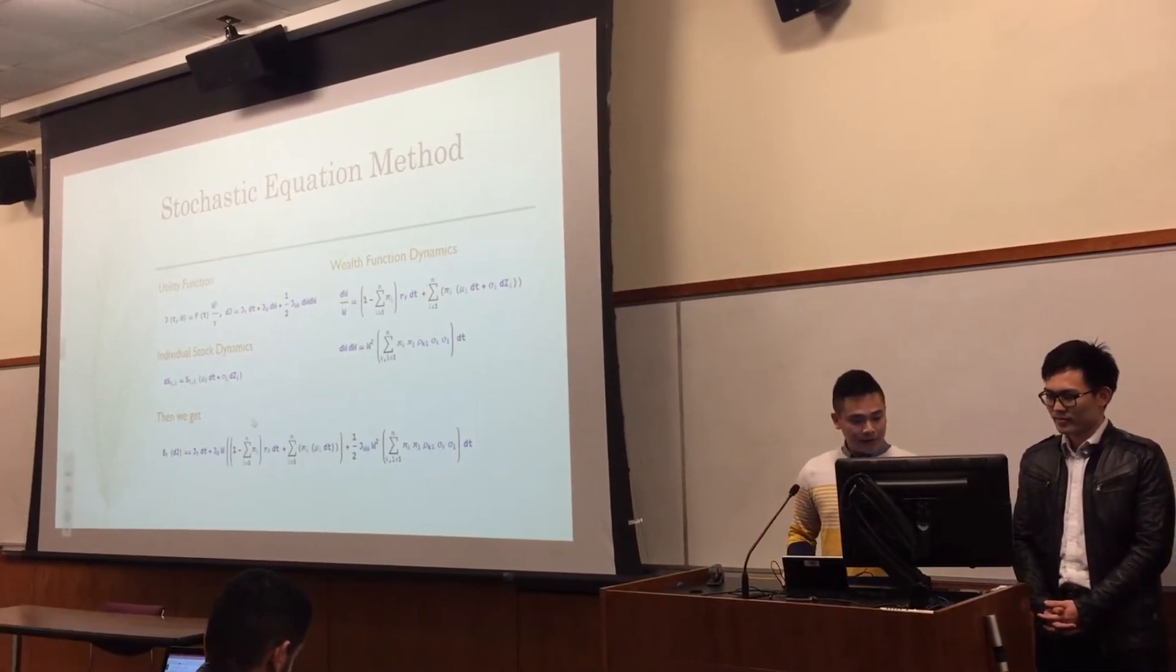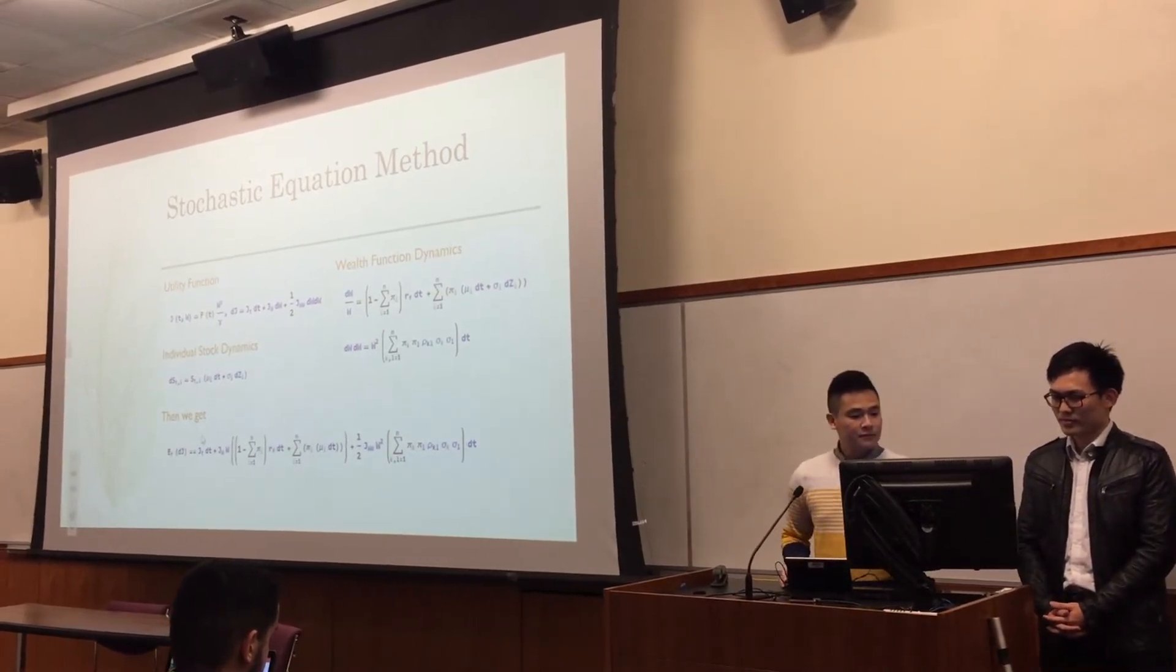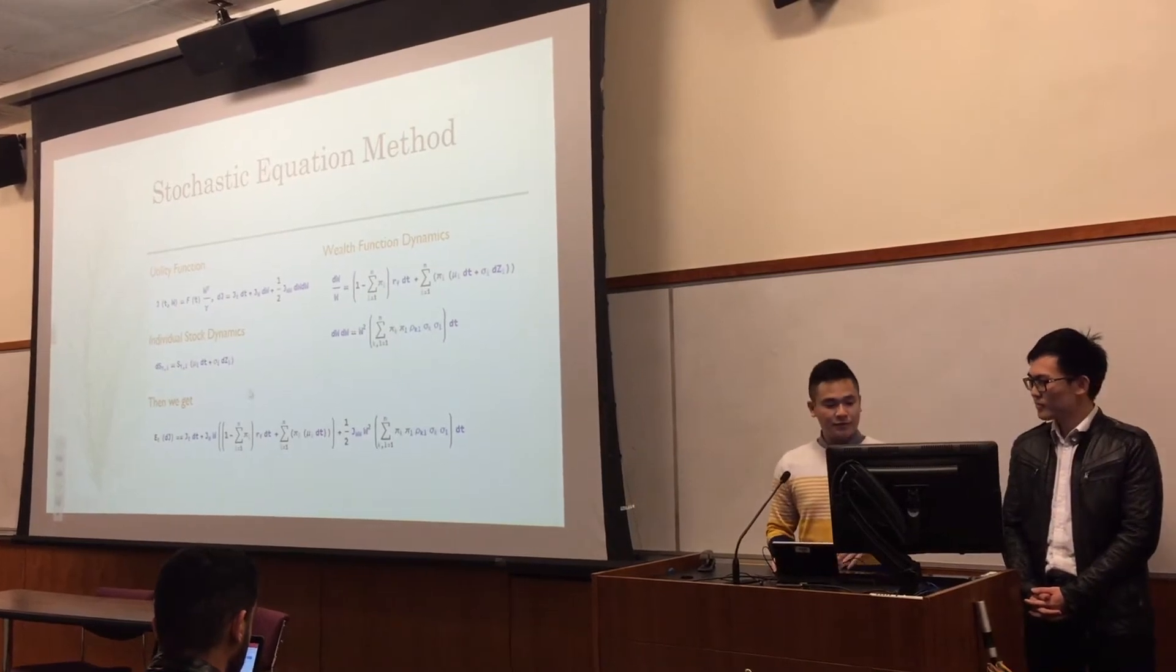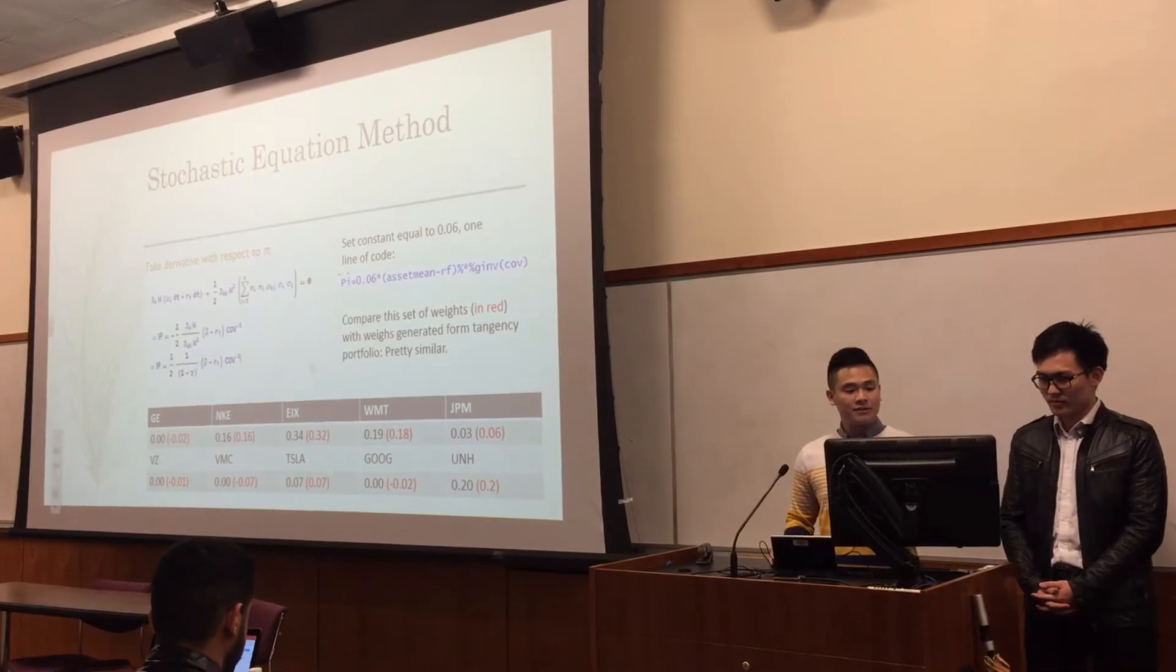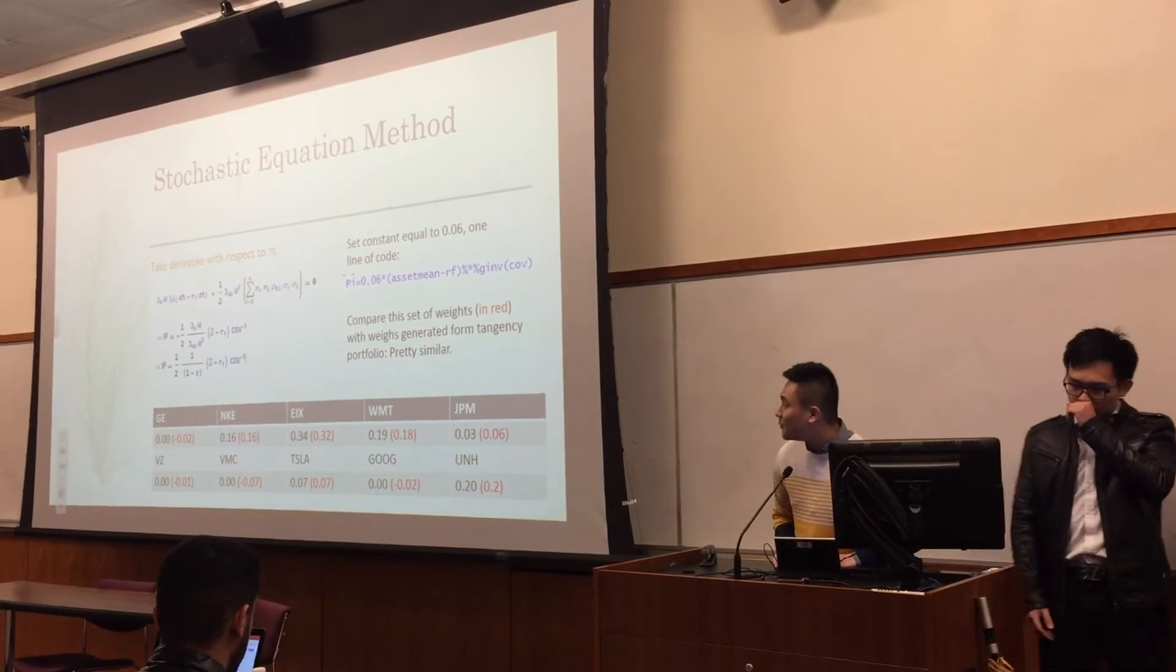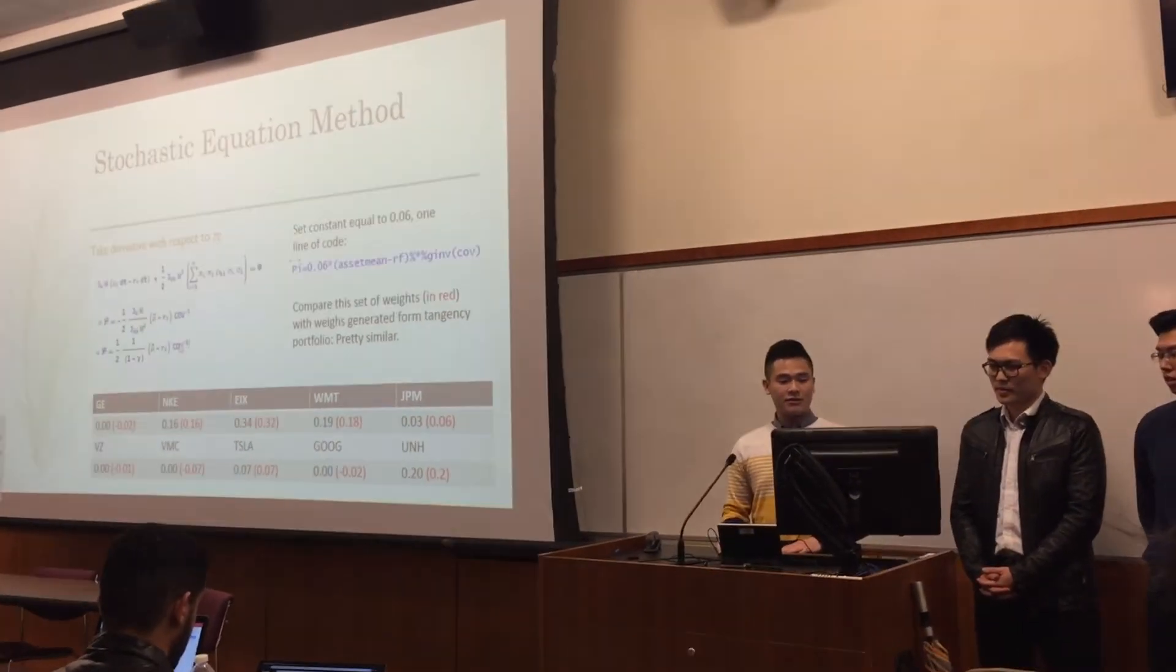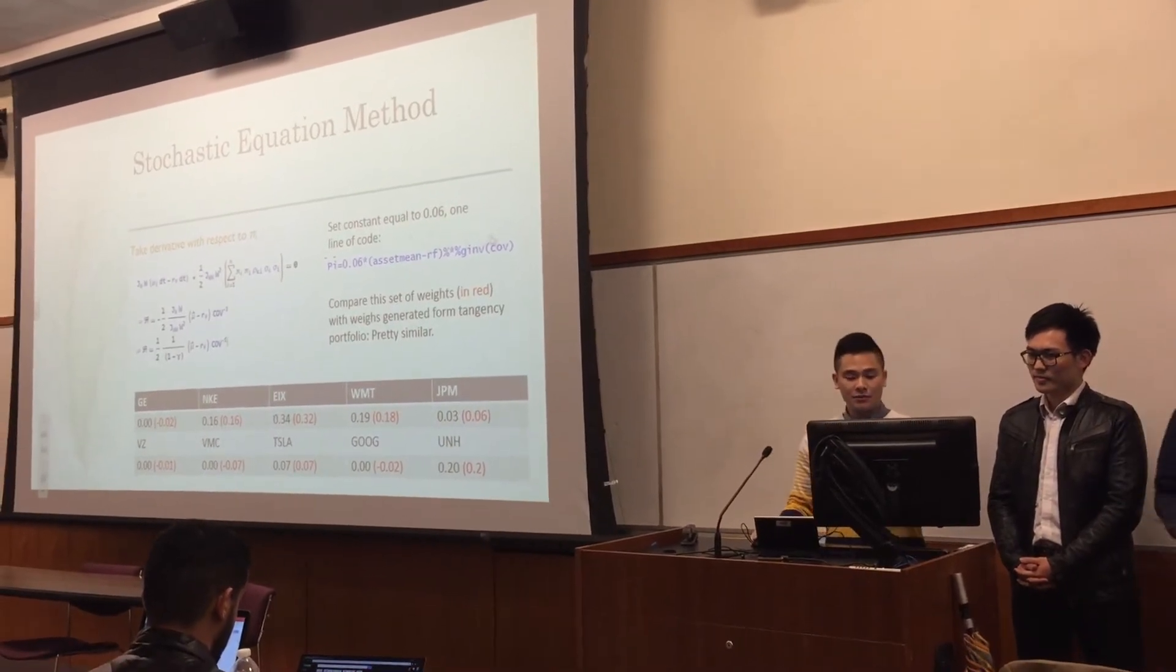The third thing is that I take the expectation of the utility function to get rid of the stochastic term. And the last thing we need to do is to optimize this equation. The way is very simple - we just take a derivative and set the derivative to zero. After some simplification, we can get the weights. It's a very simple equation. This is the correlation matrix, and this is the mean values. Now all we need is just a few lines of code.